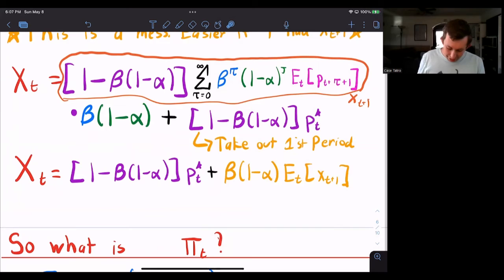So I can take the first period out, which is this guy right here. Notice that I don't need the expected value today of the price level today because I'm expecting something that I can see. So I don't need to expect it. I can just look out and see it. Then this part that I've left with is just the equation for my optimal price tomorrow.